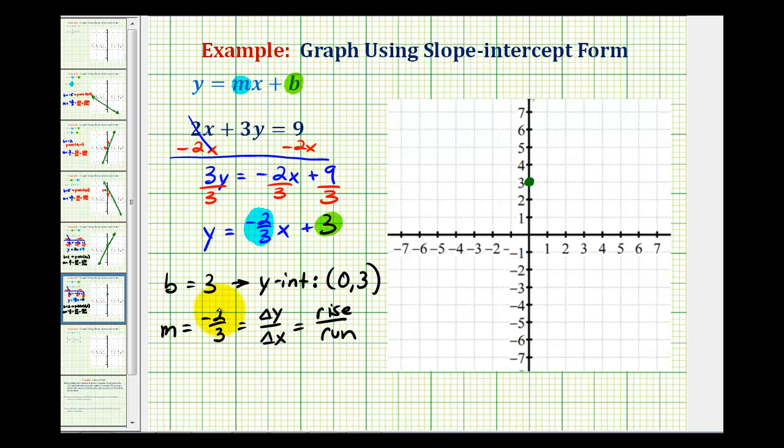Since the numerator is negative 2, we're going to go down 2 units, and then since the denominator is positive 3, we'll move right 3 units. So from here, we'll go down 2 and right 3 to here. And we can go ahead and do that again.